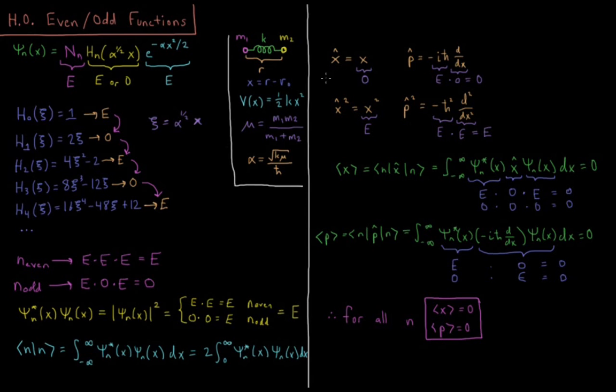What about some expectation values for position and momentum? Well, for x, that operator is just multiplying times x, that's an odd function. X squared, multiply times x squared, that's an even function.